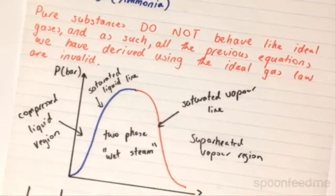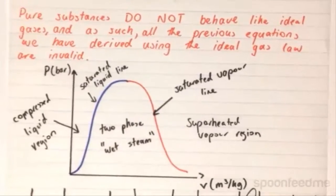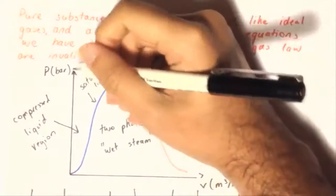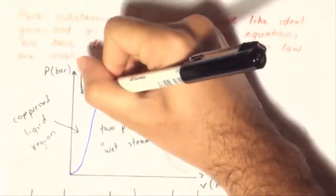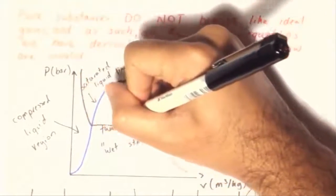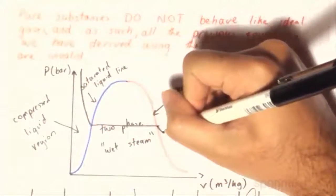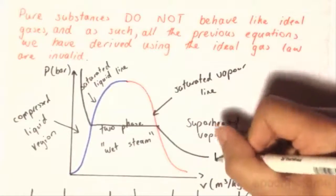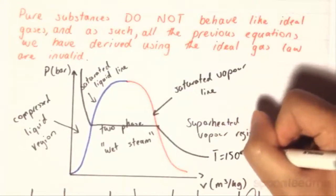Now, we have a reference for P and V, but what is the relation of this pure substance with the temperature? What we need to do for the temperature is we need to create what we call isotherms. These isotherms have a rough shape like this. Let's say this one is equal to 150 degrees Celsius.